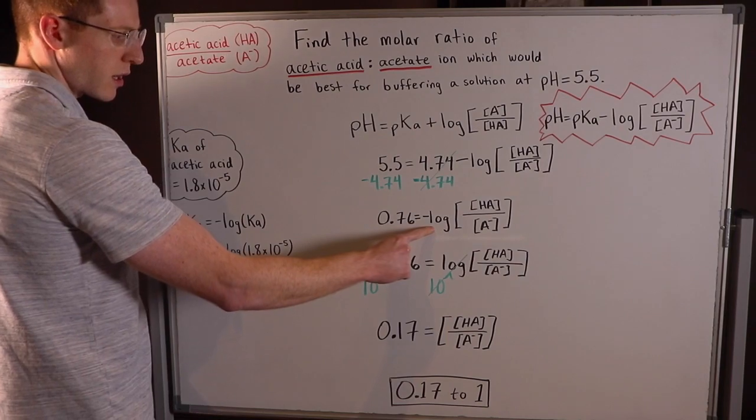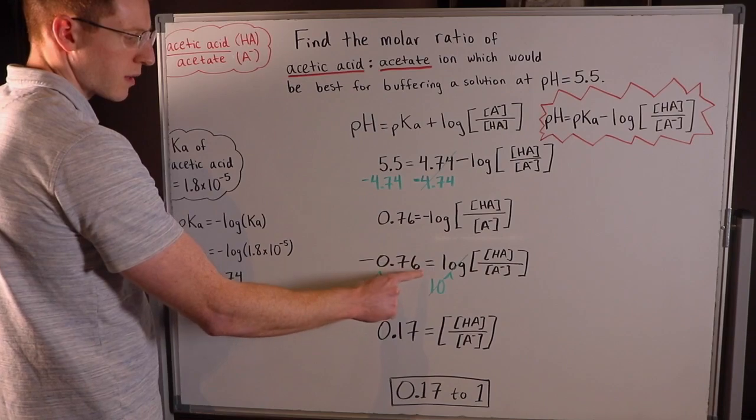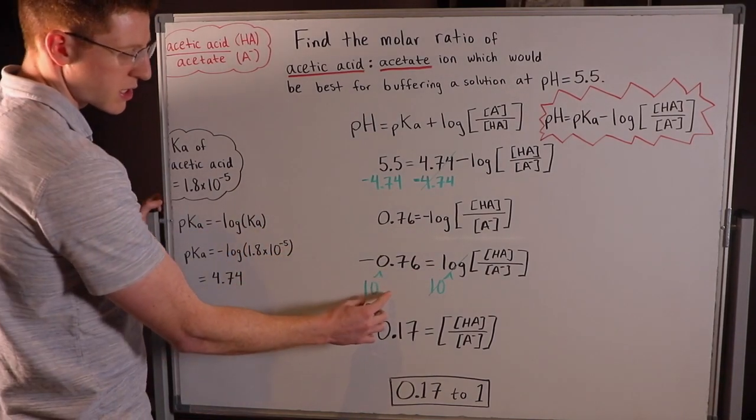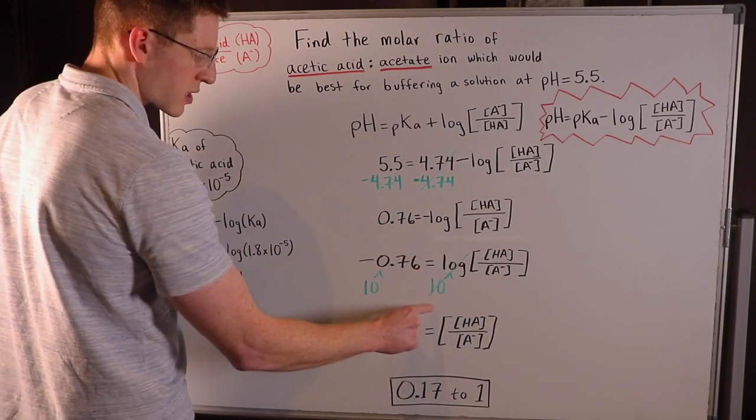Then to undo this logarithm, I had to first multiply both sides by negative 1 so that I could have a positive logarithm, and that makes the math easier. Then I did 10 to both sides so that 10 to the logarithm cancels out.